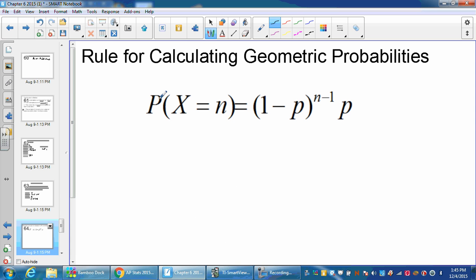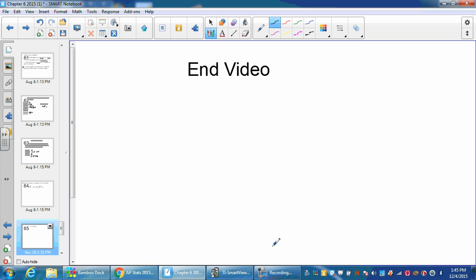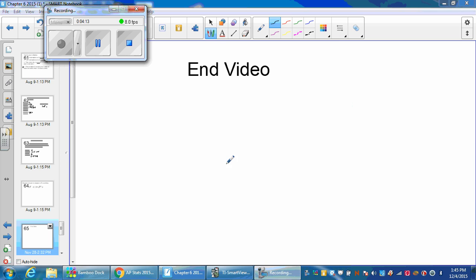So that's our geometric probability. Probability X equals n, 1 minus p to the n minus one, times p. And hopefully you can do some on your own.